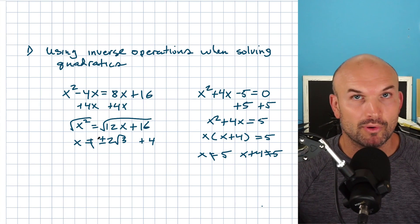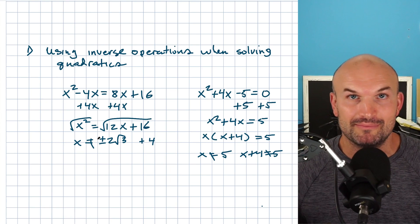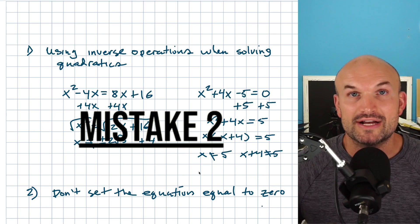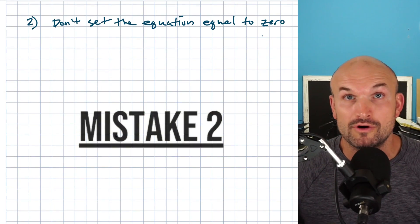Now, one thing I said, those are very important. Set your equation equal to zero, because guess what? That is mistake number two. Students don't set the equation equal to zero and they tried to apply factoring or quadratic formula.